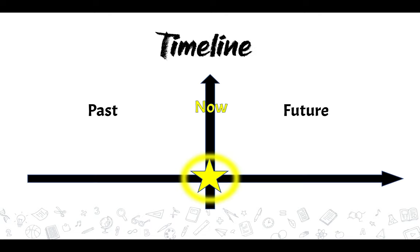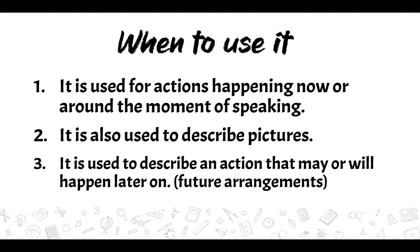Let's look at the second slide and the timeline. We need the horizontal line that represents the past on the left side and the future on the right side. Then we have a vertical line representing now, plus a star and a circle. That's where the present continuous or present progressive is.